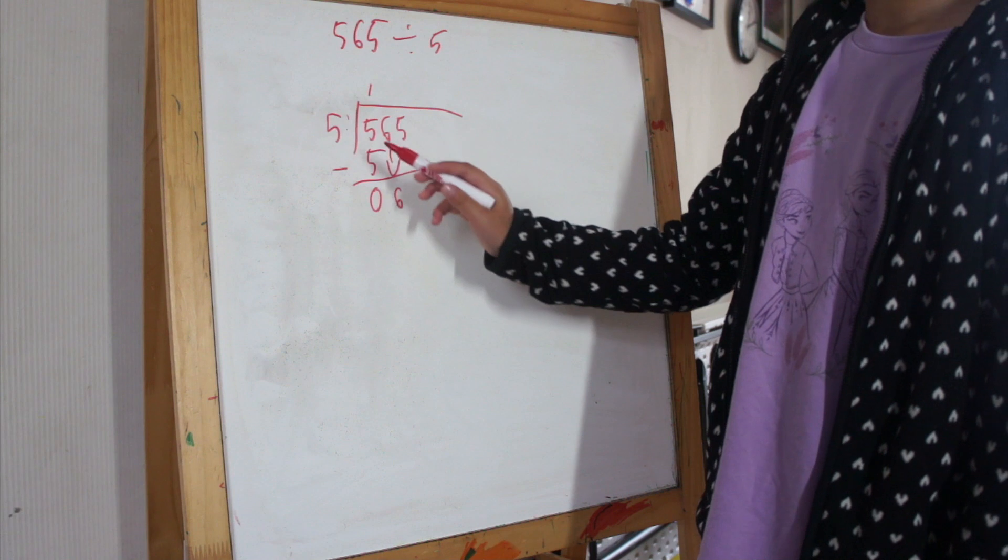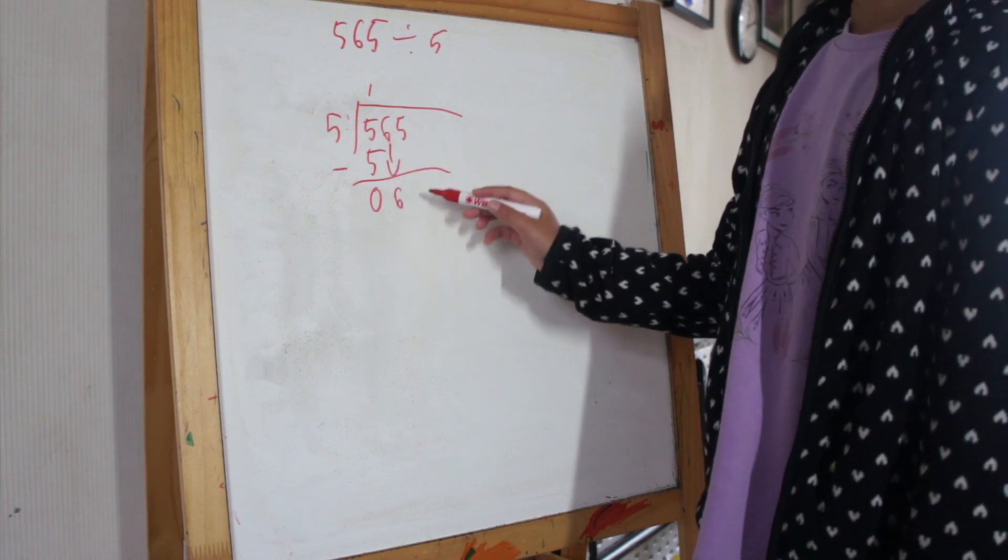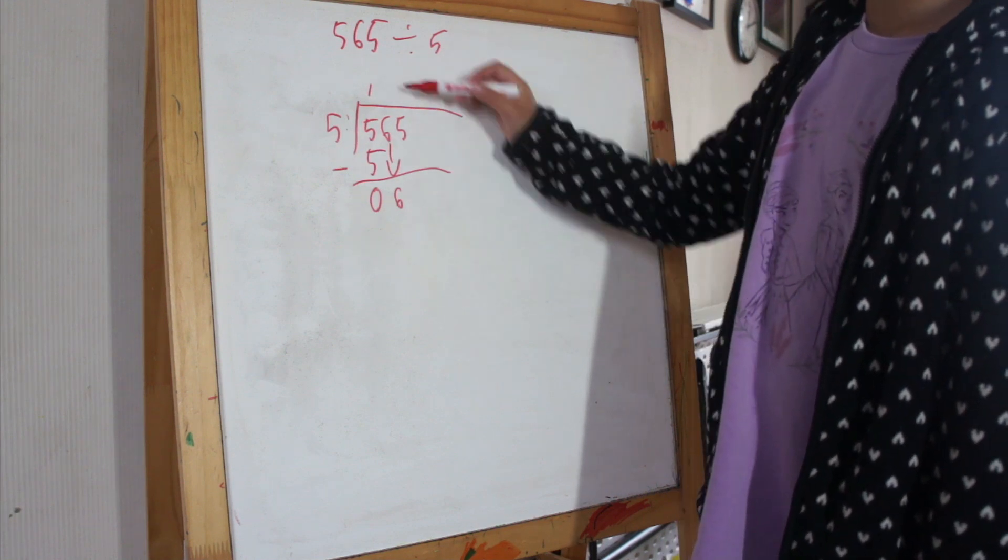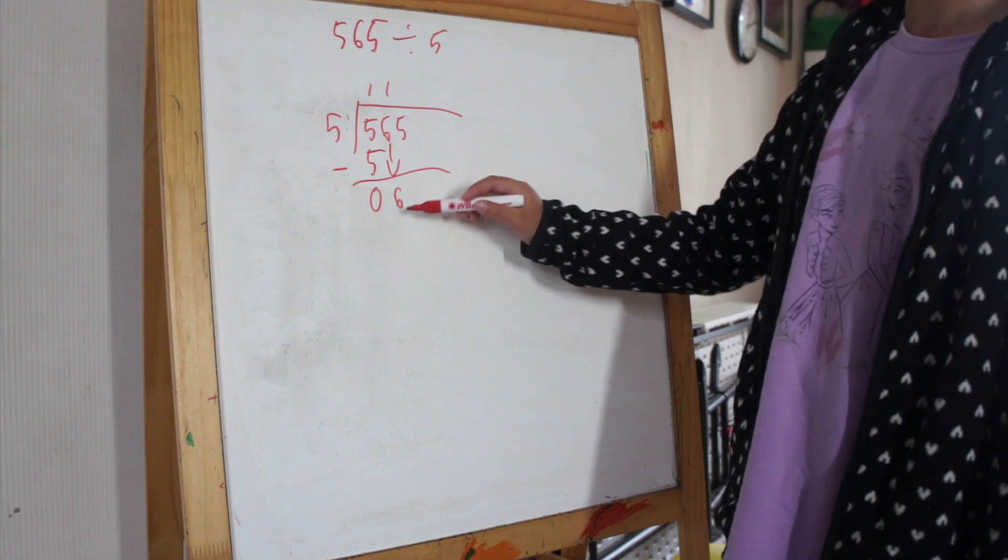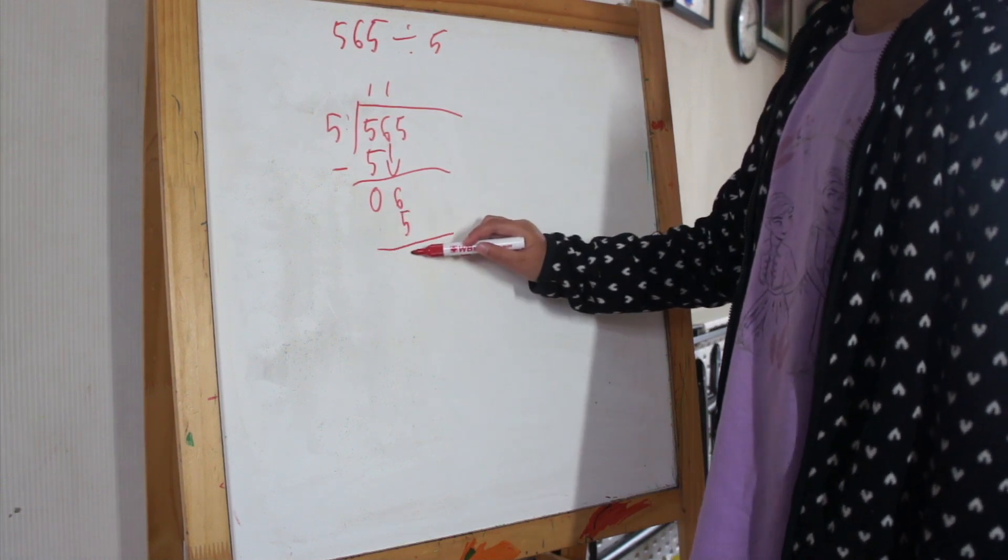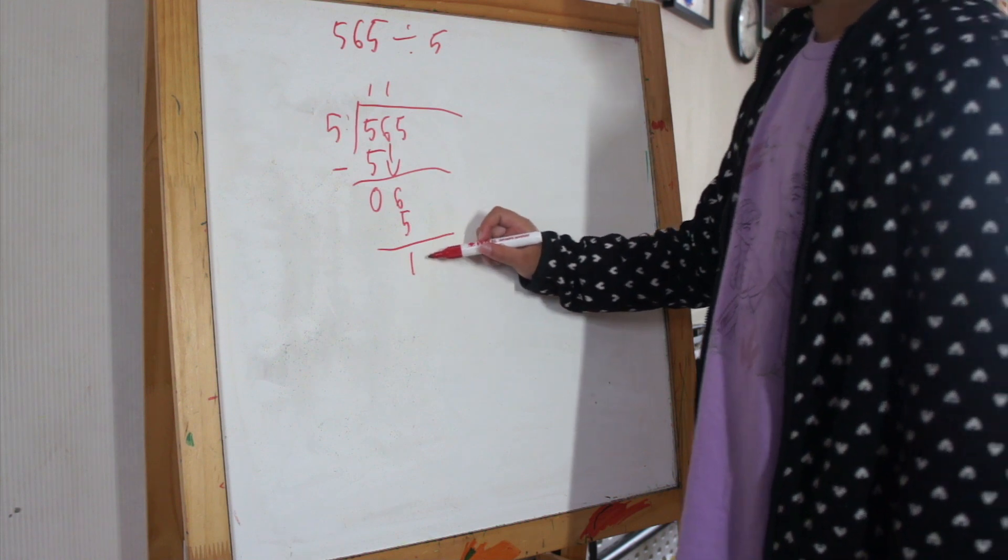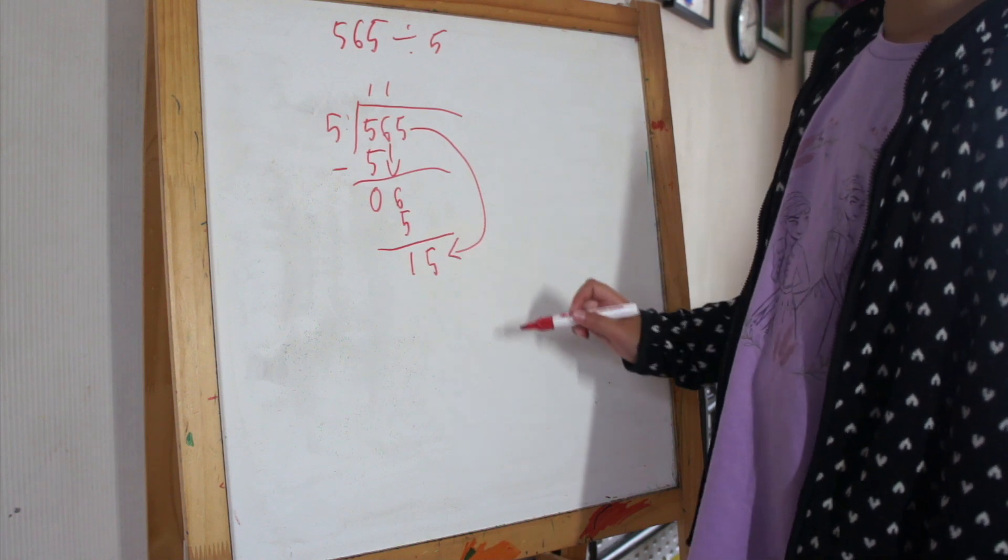Then think: 5 times what equals 6? 5 times 1 equals 5, and that's close enough to 6. Then we write 5 underneath the 6 and subtract it again. Then we pull the 5 down right here, next to the 1.